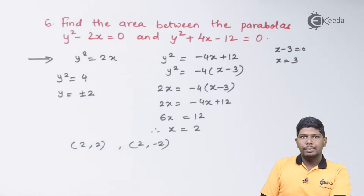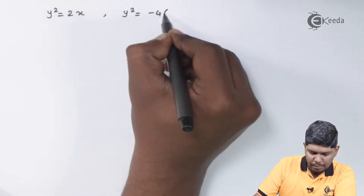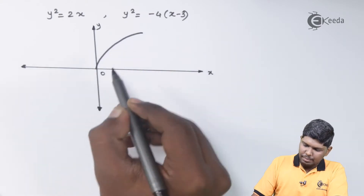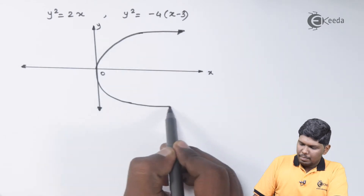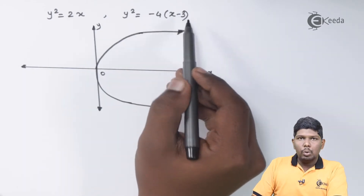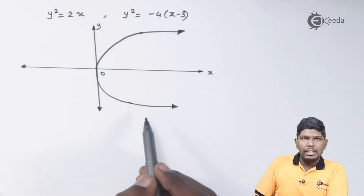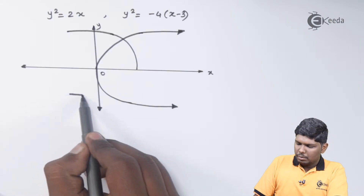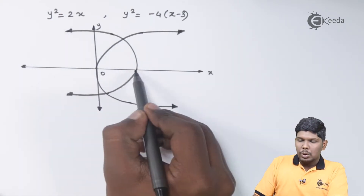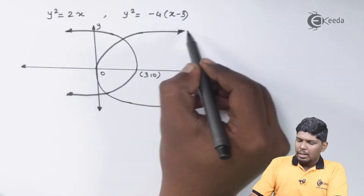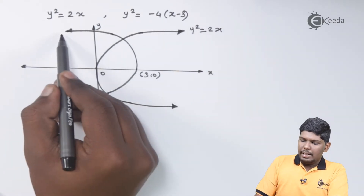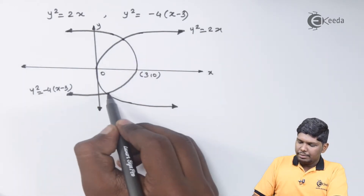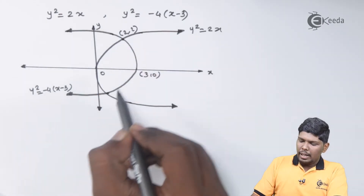Let us draw the two parabolas. The first parabola, y squared equals 2x, opens in the positive x-axis direction. The second parabola, y squared equals minus 4(x minus 3), has its vertex at (3, 0) and opens in the negative x-axis direction. The two points of intersection are (2, 2) and (2, minus 2).